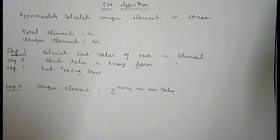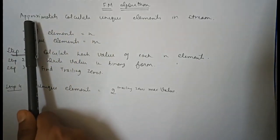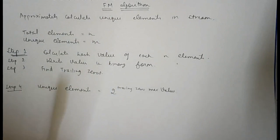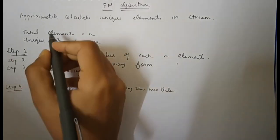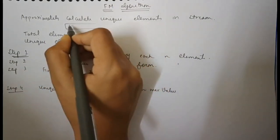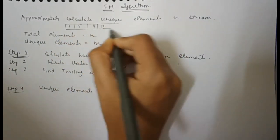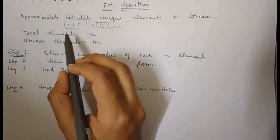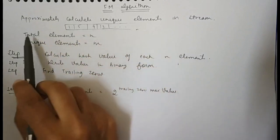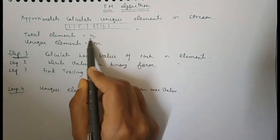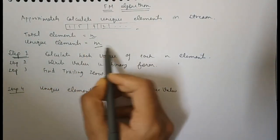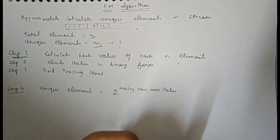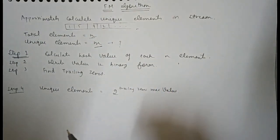In this FM algorithm, what it does is the approximate calculation of finding the unique elements in a stream. For example, in big data analytics, suppose we are given a stream having continuous values such as 1, 5, 7, 12, and so on. Out of the stream, we need to count how many unique values are there. From the start of the stream till a point, we calculate the number of elements that is m, and we assume the unique number of elements is m, so we need to find what is the value of m.